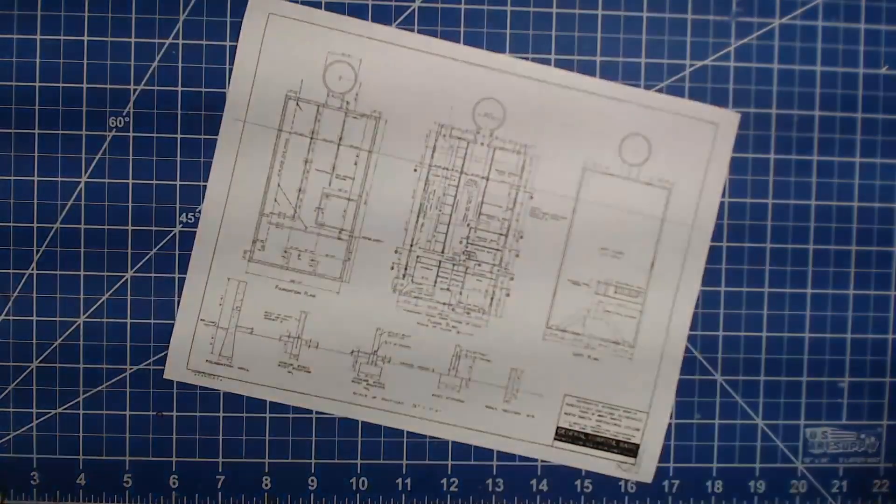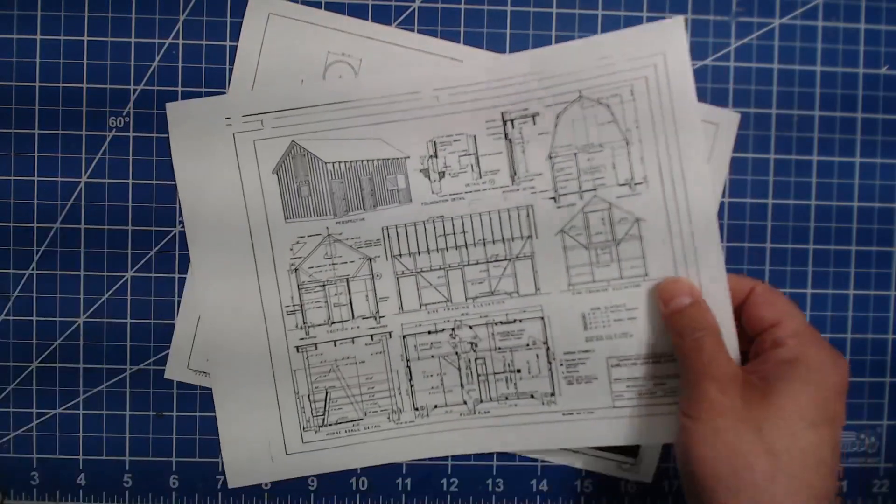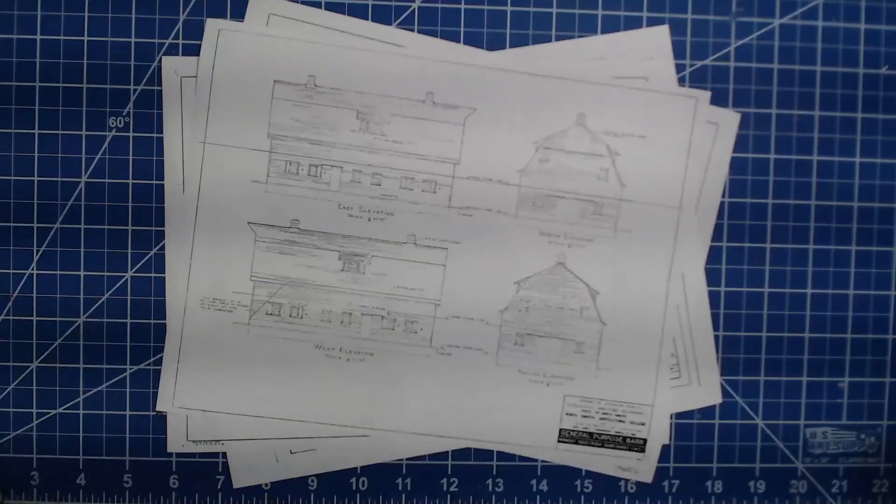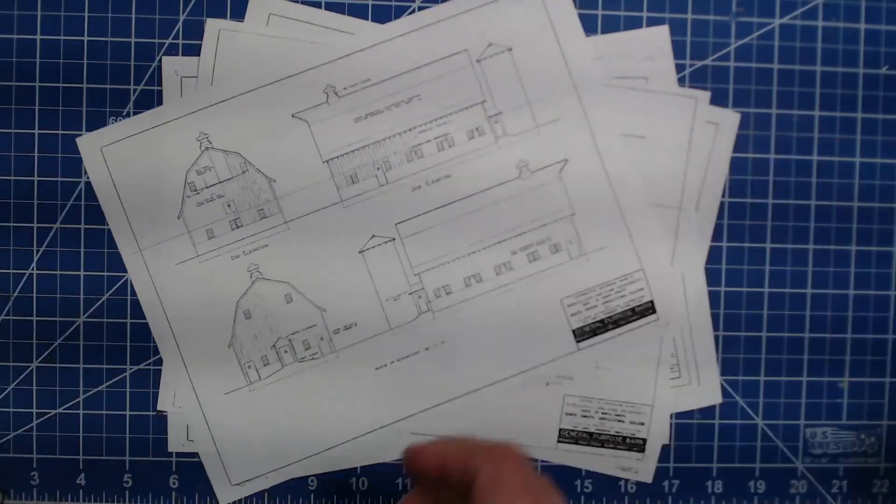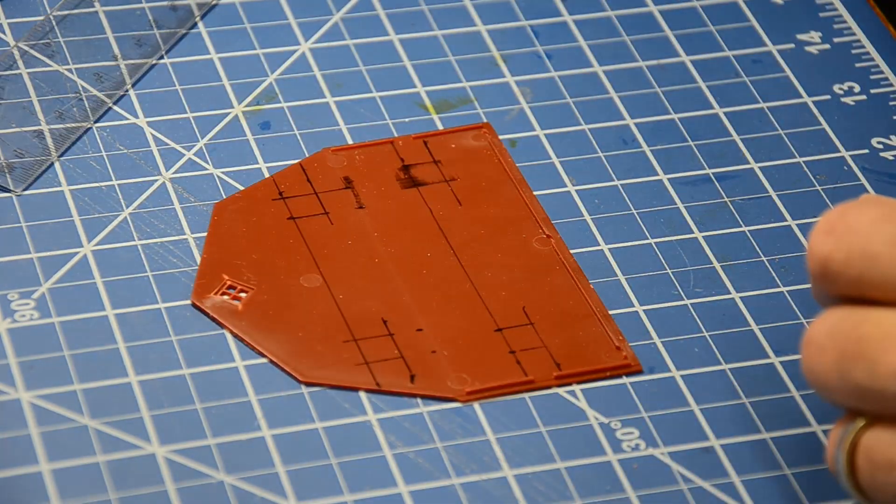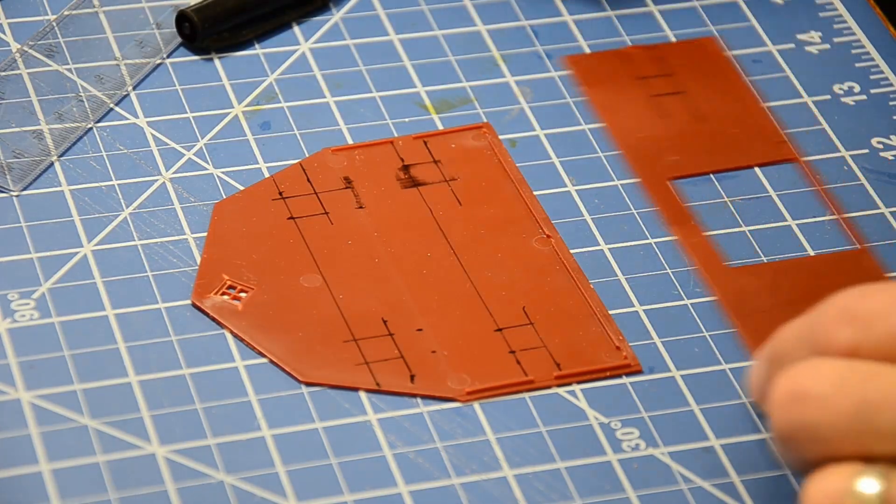I found a large number of farm structure blueprints on the North Dakota State University site, and used them to plan out the interior. One thing I noticed is all the barns had more windows than the Meadowhead barn, so I decided to add some. In the end, I added 12 - two on each of the front and back sides, and four on each end.